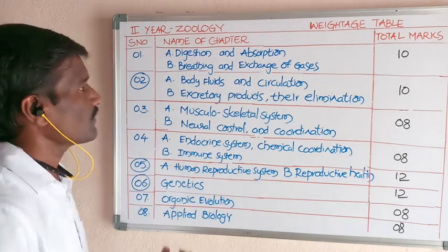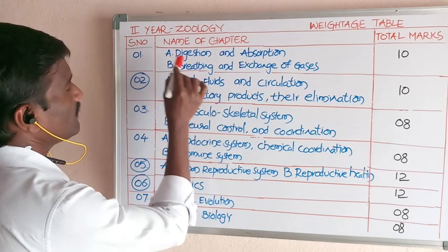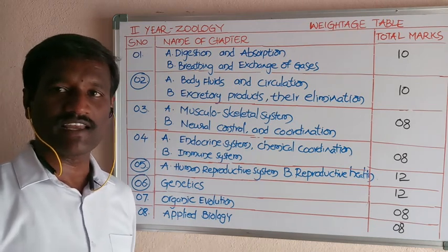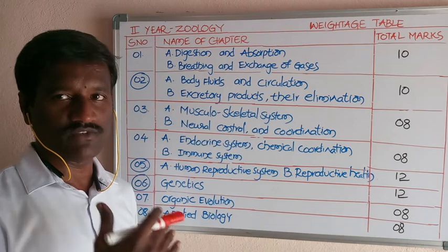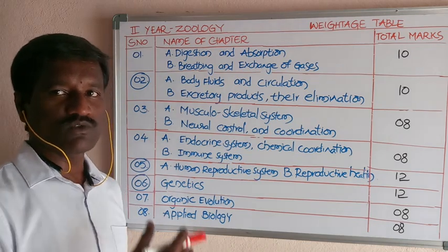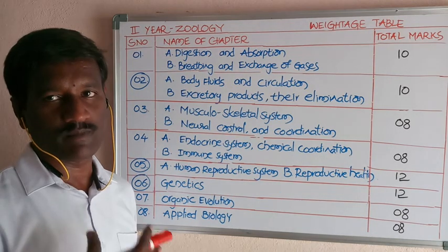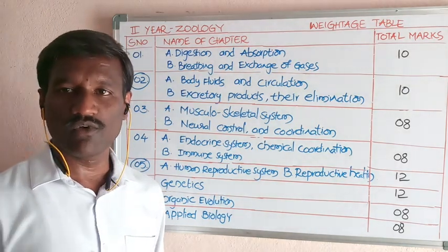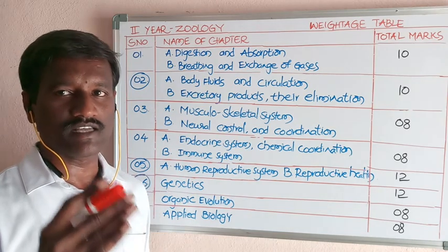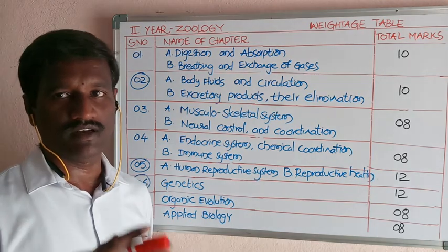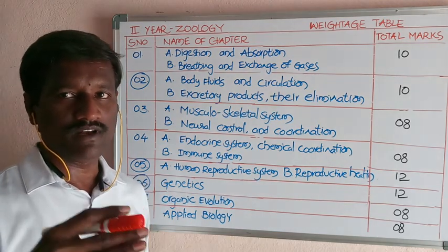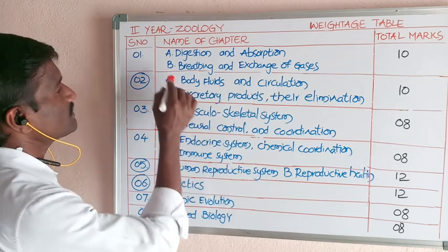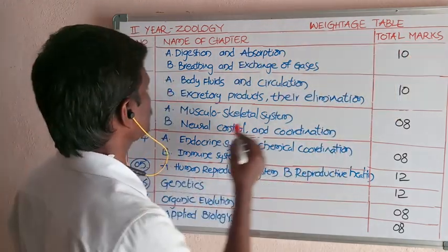Chapter 1B is breathing and the exchange of gases. Breathing means inhalation and exhalation of two types of gases: oxygen and carbon dioxide. These gases enter the lungs via the respiratory tract. The gases reach the cells via blood circulation, where cells absorb oxygen to help in oxidation of food particles and energy is produced. The weightage of the first chapter is 10 marks.